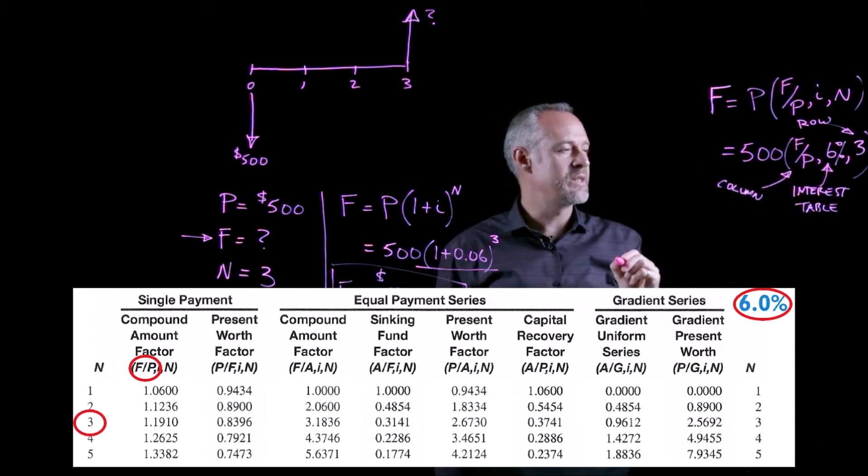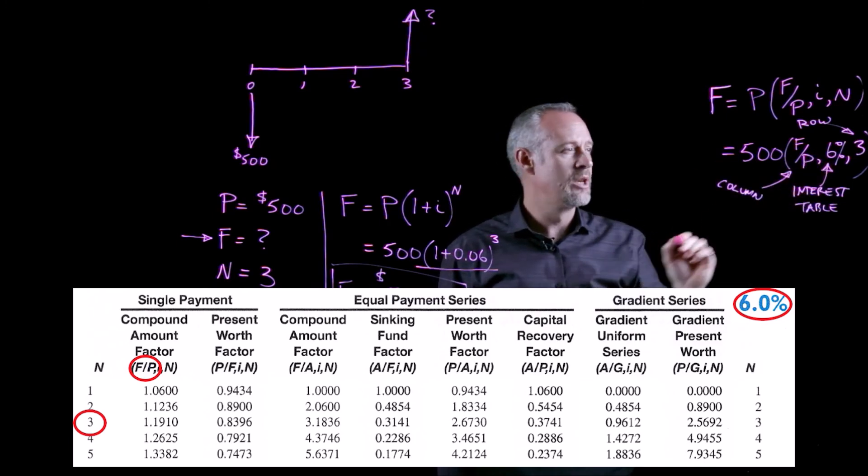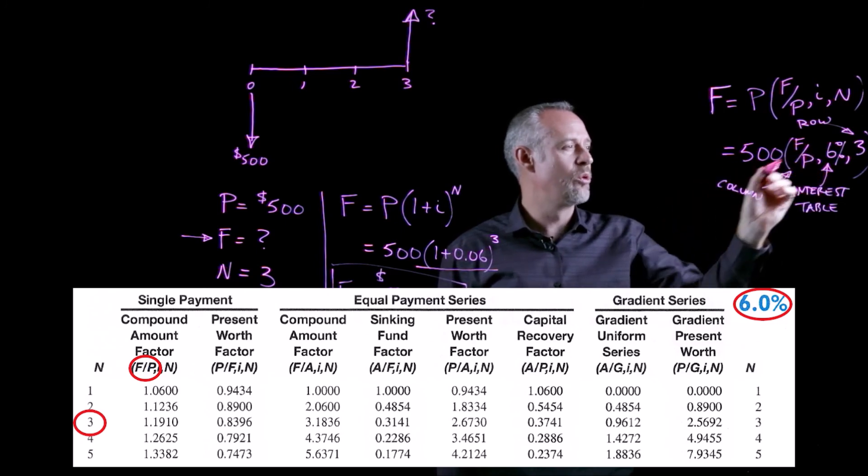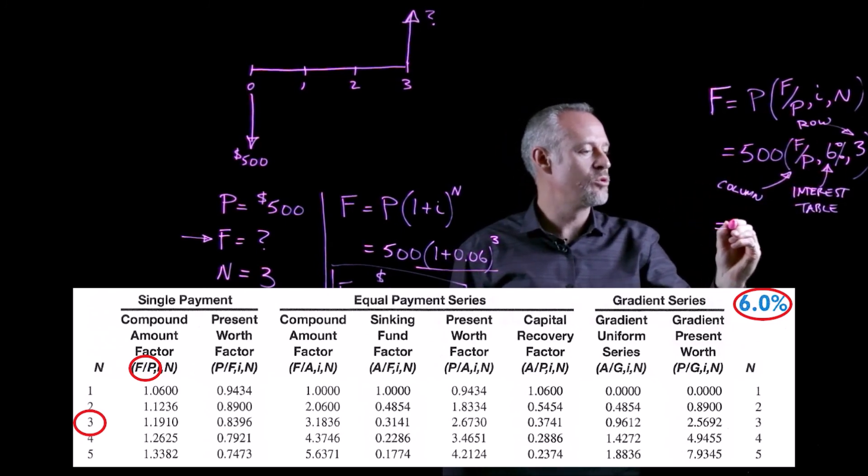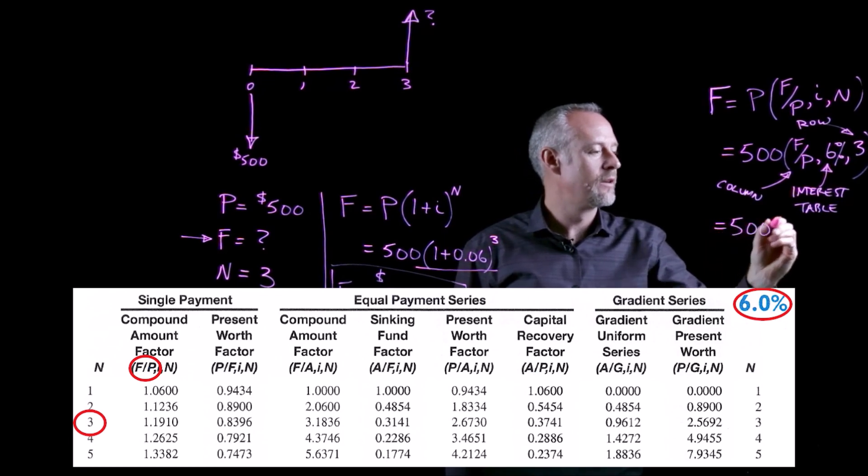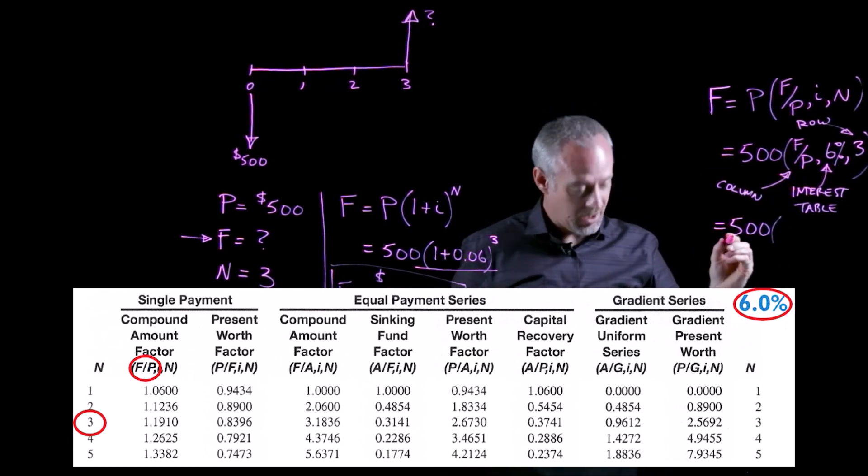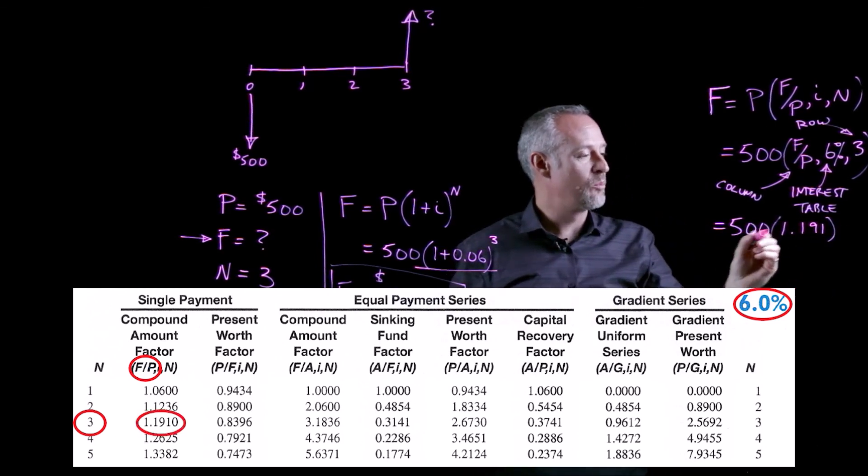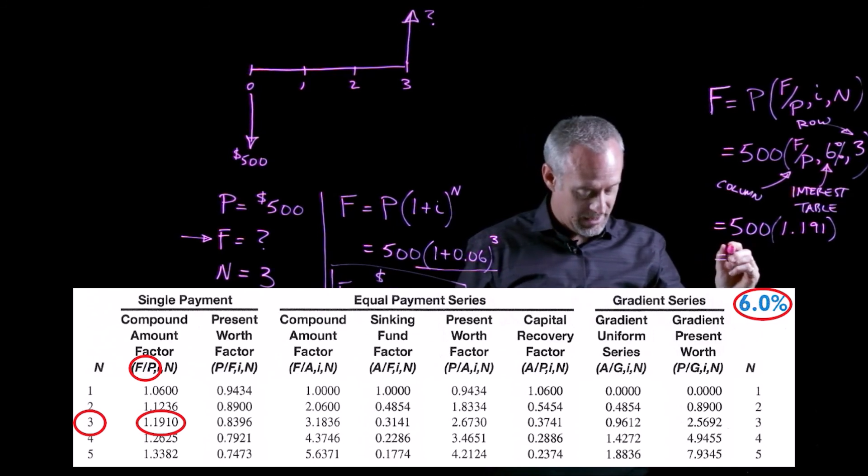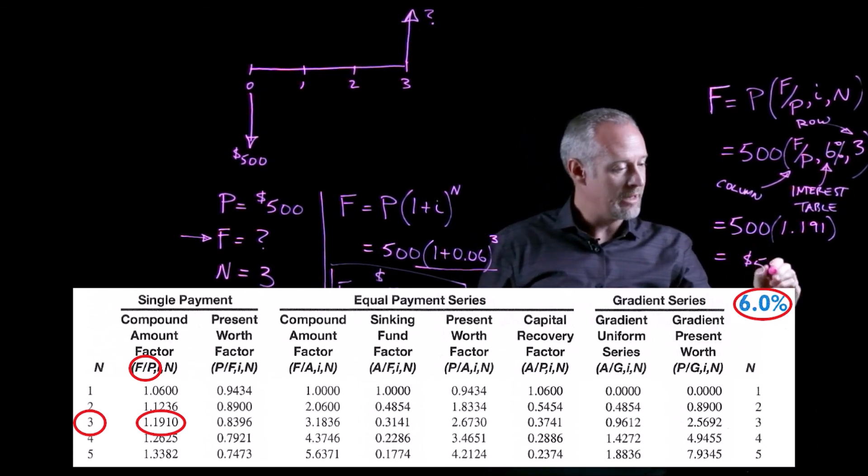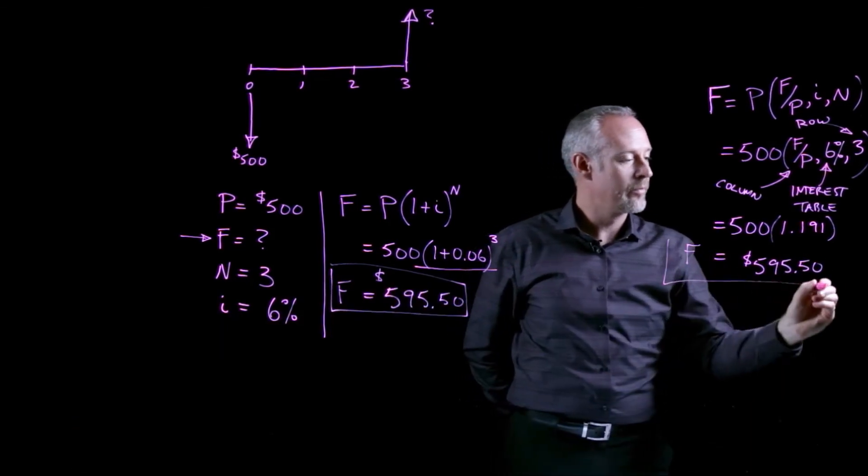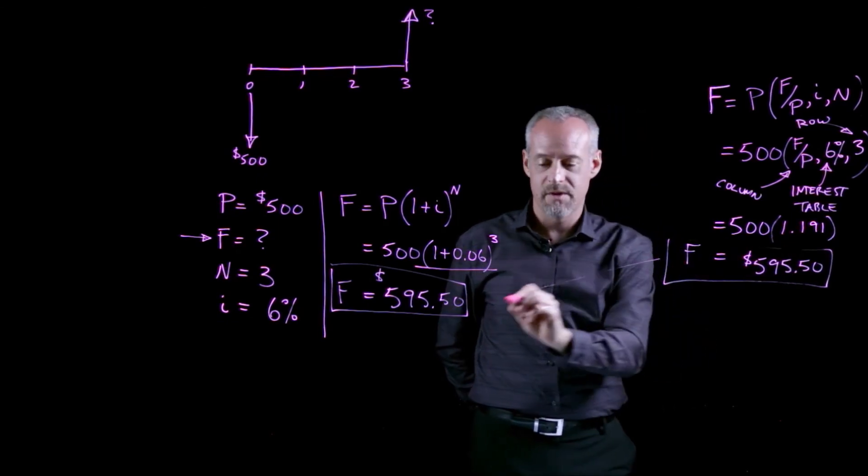If I go to the back of my textbook, and I'd encourage you to do this now, and I find the 6 percent interest table and I go down the column for F given P and I go across the row for N equal to 3, you should find a value in your table of 1.191. If I multiply 1.191 times the 500, I end up with $595.50.